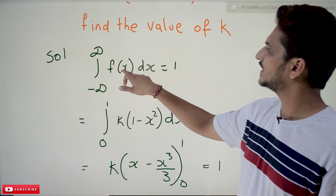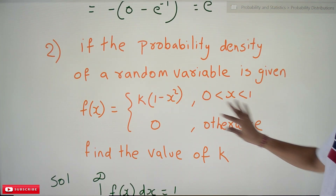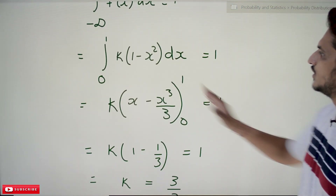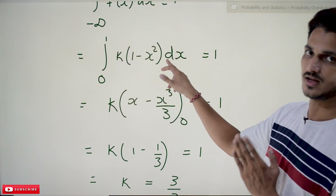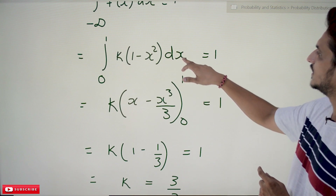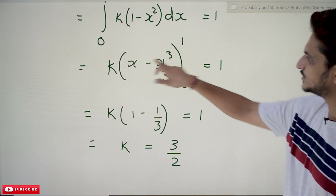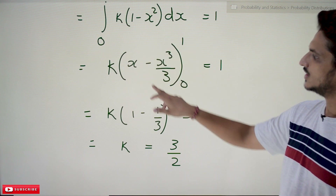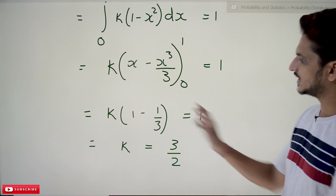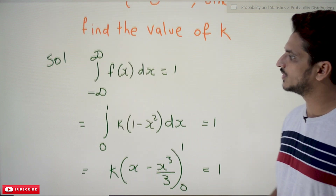Setting the integral from minus infinity to infinity of f(x) dx equal to 1, and since the function is non-zero only from 0 to 1, we get the integral from 0 to 1 of k(1 − x²) dx = 1. Taking k outside, the integral of (1 − x²) is x − x³/3, evaluated from 0 to 1. Substituting x = 1 gives k(1 − 1/3) = 1, and substituting x = 0 gives 0. Therefore k × (2/3) = 1, so k = 3/2.